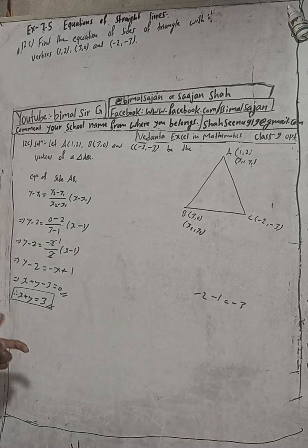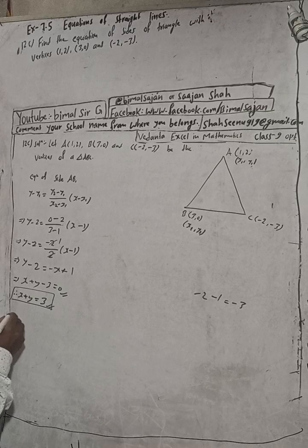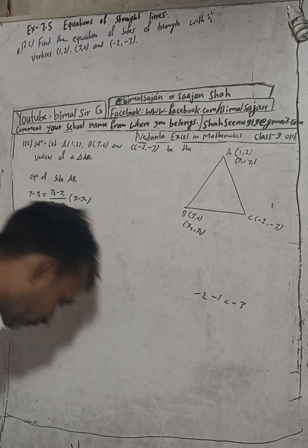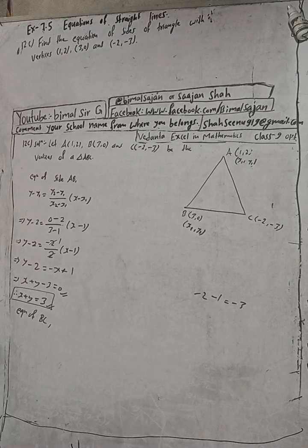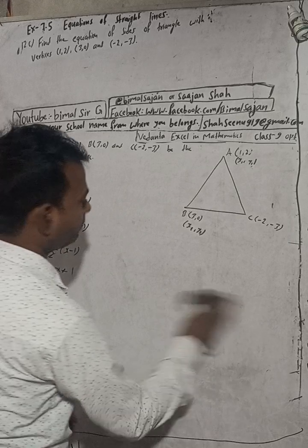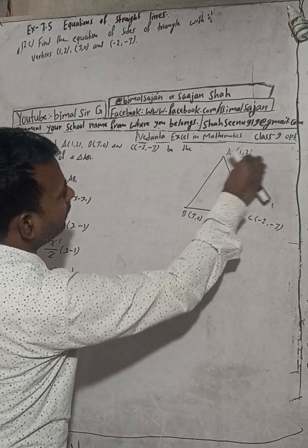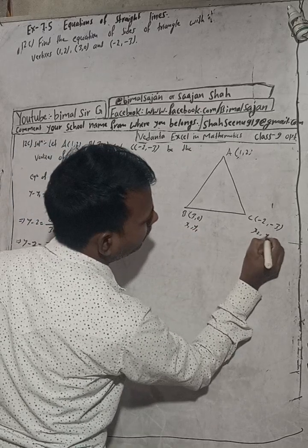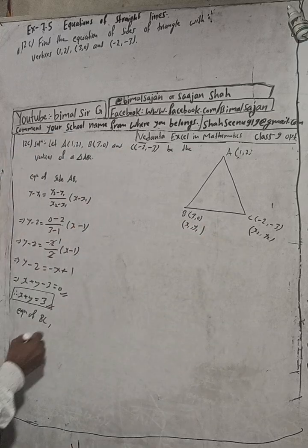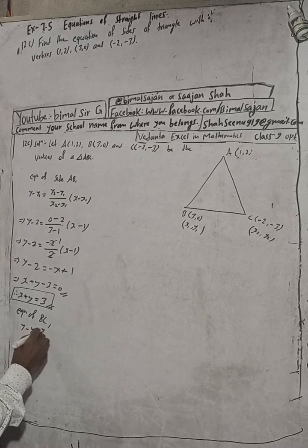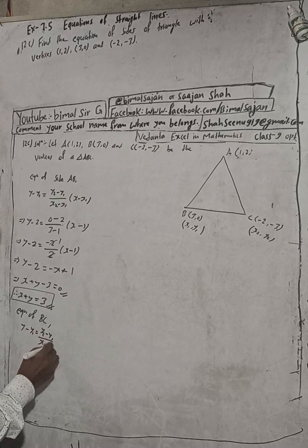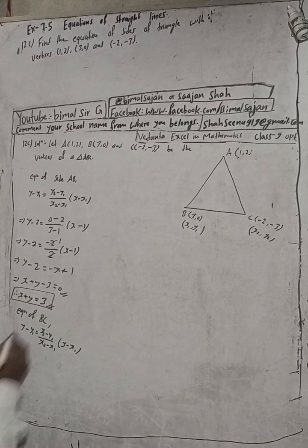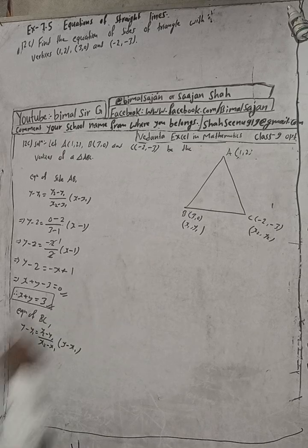Now we will find the equation of BC. For side BC, I suppose B(3,0) as (x1,y1) and C(-2,-3) as (x2,y2). The same formula applies: equation of BC is y minus y1 equals (y2 minus y1) over (x2 minus x1), times (x minus x1).